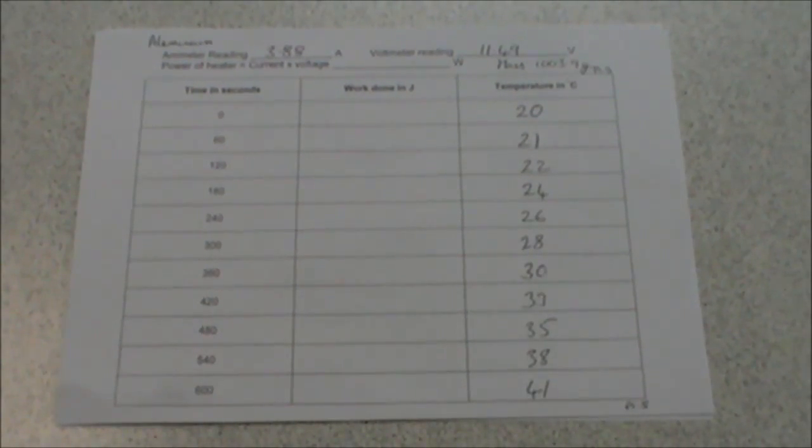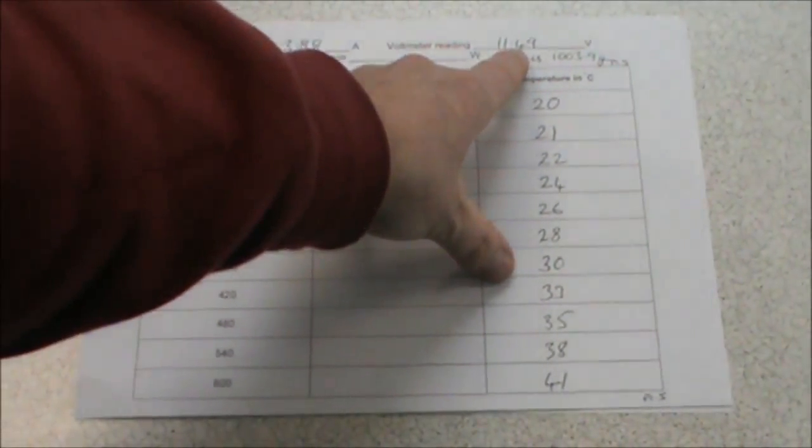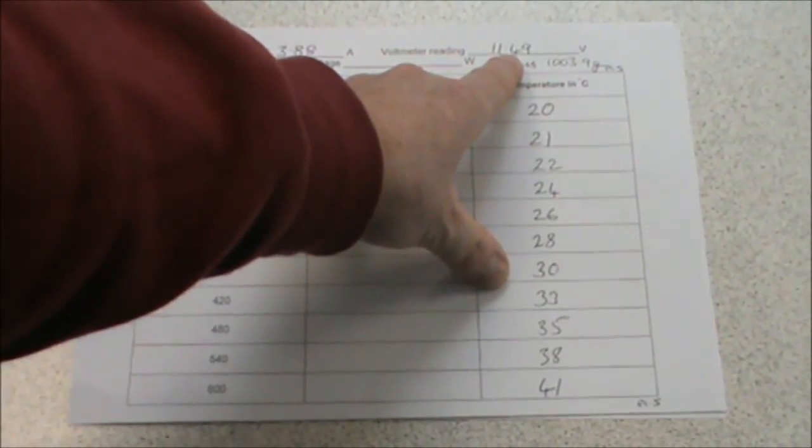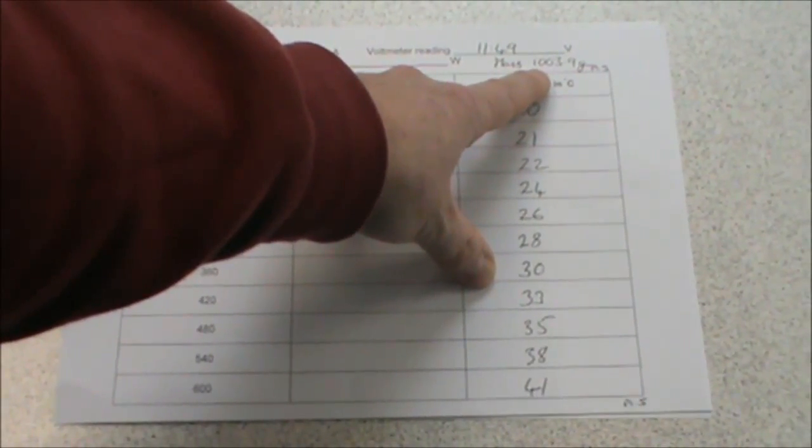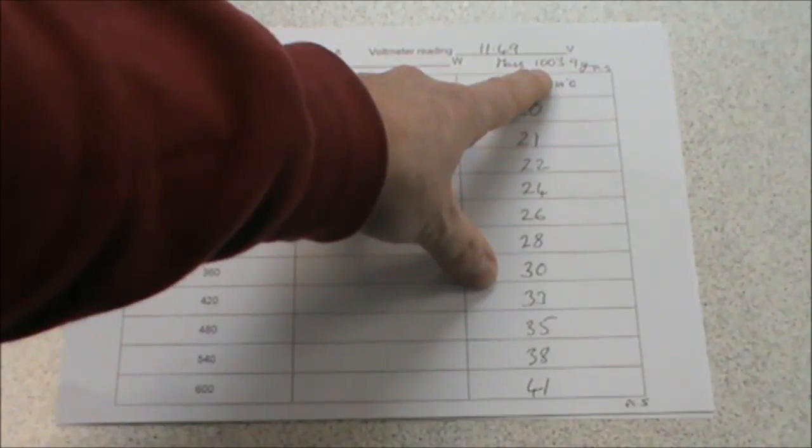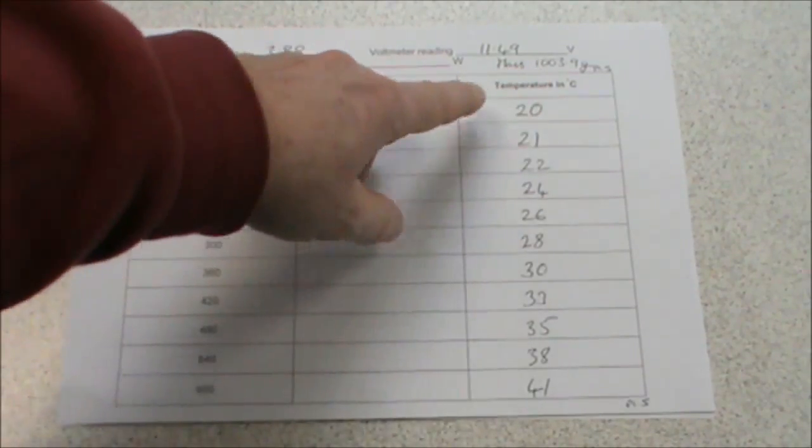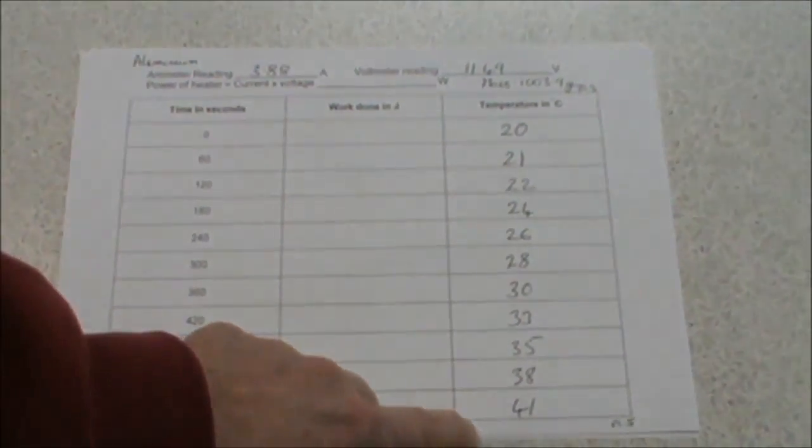The final set of results that you require are for aluminium. The ammeter reading was 3.88 amps, the voltmeter reading 11.49 volts, and the mass of 1003.9 grams. These are the temperature readings that you need to record in your results table.